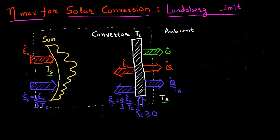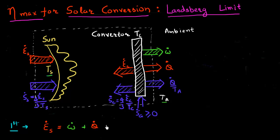I'll stick to the basics and just use the first and second law of thermodynamics to derive this limit. So let me write down the first law of thermodynamics, which basically says energy is conserved in this conversion process. I can write down this energy conservation as: the energy flux coming from the sun must be equal to the rate at which work is produced, plus the rate at which heat is emitted out from the system, plus the energy flux associated with radiation coming from this cell.